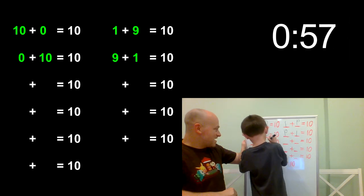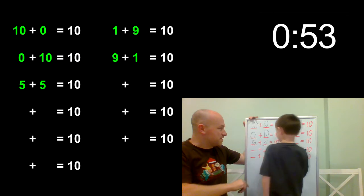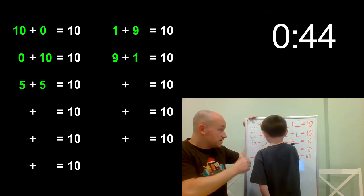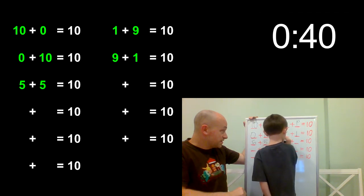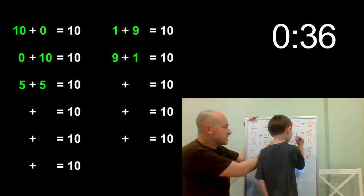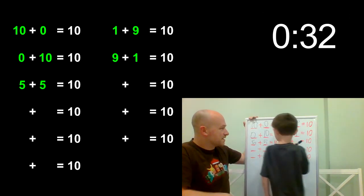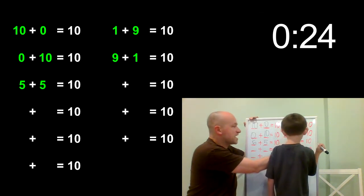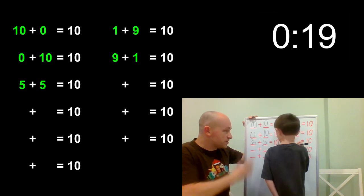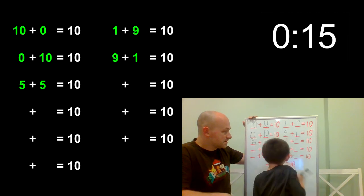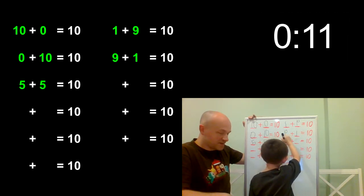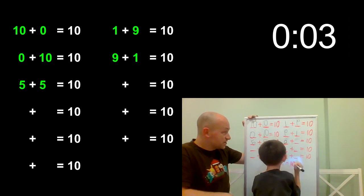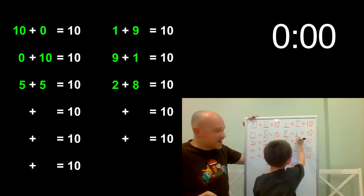Use a new number — a number you haven't used yet. You've already used 10 both ways, already used nine, don't use five, don't use one, don't use zero — use new numbers, Joe! Come on, new numbers. Two — you got it, put the eight down!